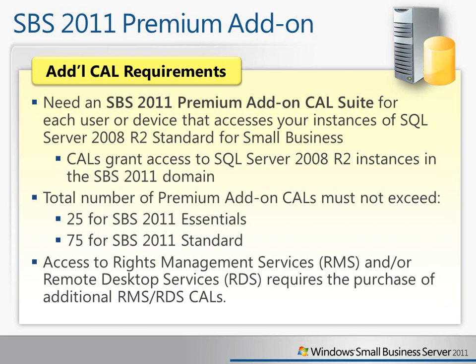Keep in mind that the total number of Premium Add-on CALs must not exceed 25 if you have the Essentials Server, and 75 if you have the Standard Server. These must conform to the licensing maximums of the SBS software you're running. Also, for the Premium Add-on, if you want to use Rights Management Services or Remote Desktop Services, you need to purchase additional CALs for either RMS or RDS.